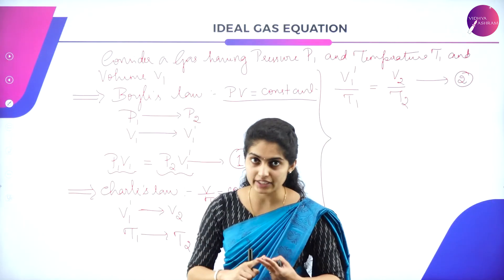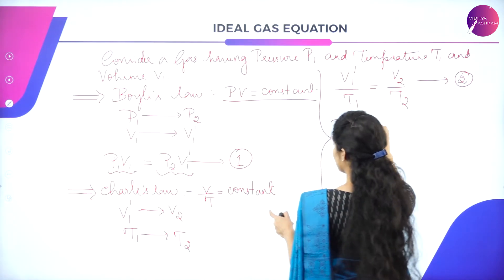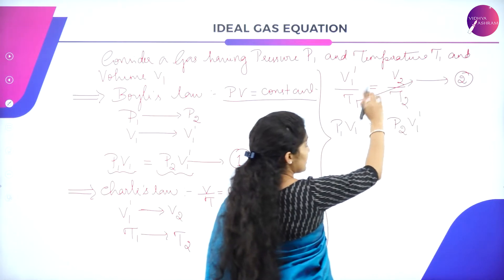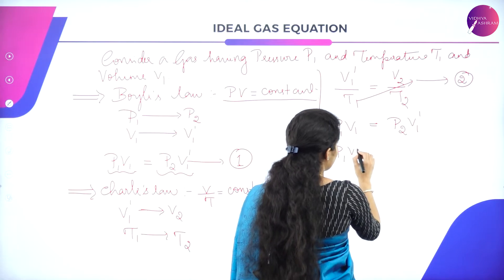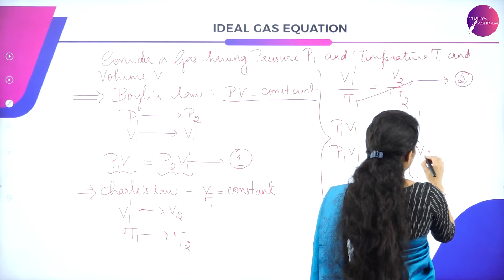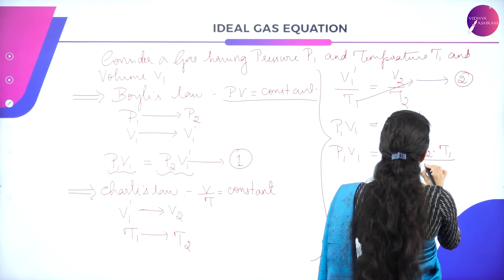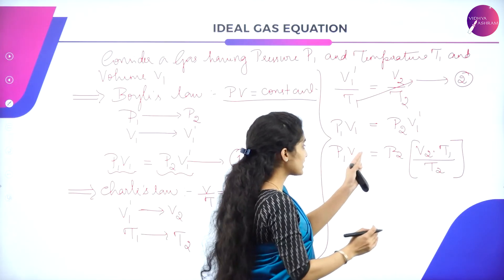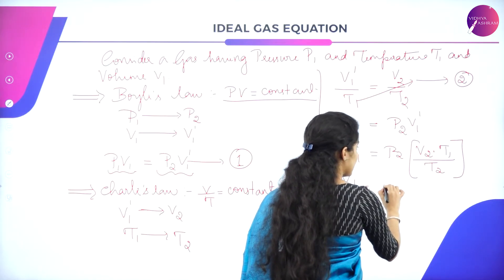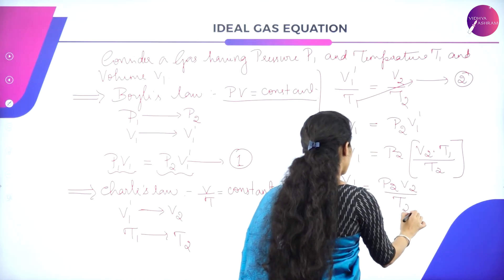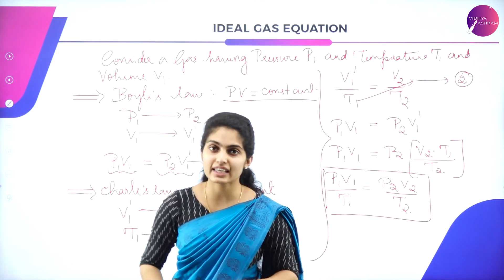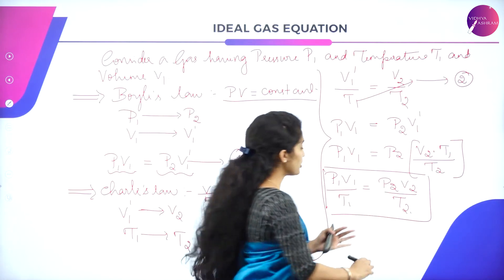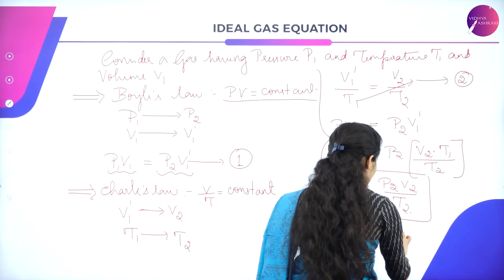Combining Equations 1 and 2: from Equation 1, P1V1 = P2V1', so V1' = V2T1/T2. Substituting back gives P1V1 = P2 × (V2T1/T2). Rearranging, all subscript-2 terms go to one side and subscript-1 terms to the other: P1V1/T1 = P2V2/T2. This is the ideal gas equation — the one which obeys Boyle's law as well as Charles' law. In general, PV/T = constant.